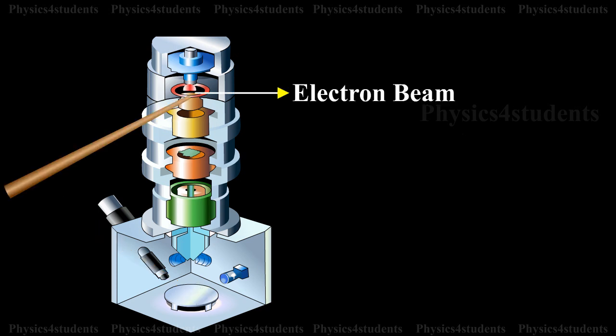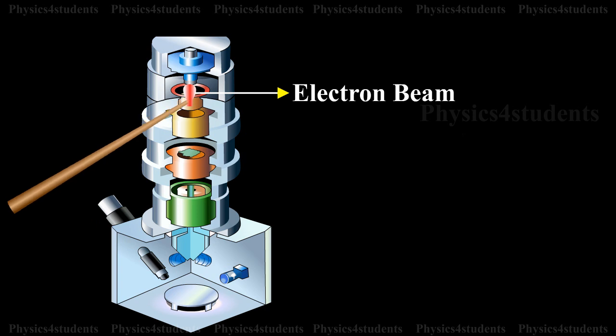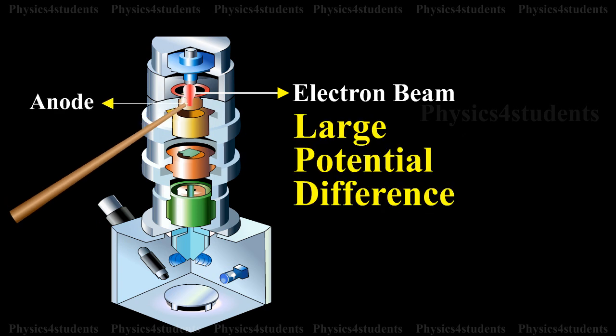An electron beam emitted by a filament is accelerated through a large potential difference in a device called electron gun.